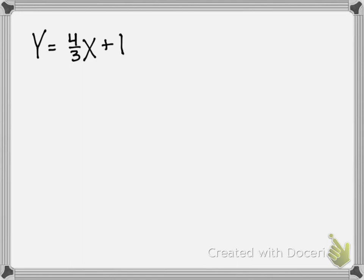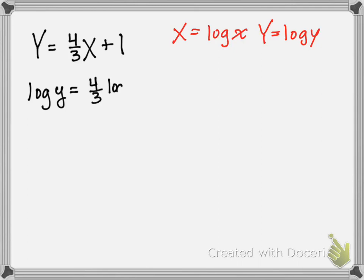So here it is, Y equals four-thirds X plus one. The Y intercept is one. Now I'm going to back substitute. Remember that we said that capital X is equal to the log of lowercase x and capital Y is equal to the log of lowercase y. So I'm going to make those substitutions in the equation, so I get log lowercase y is equal to four-thirds log lowercase x plus one.